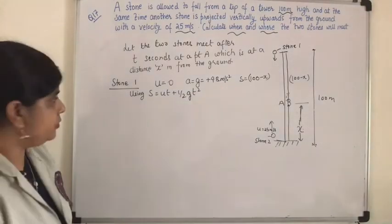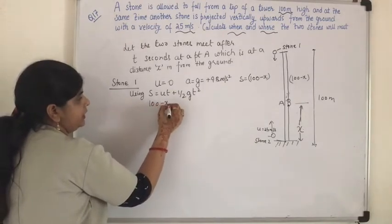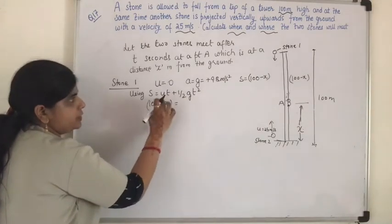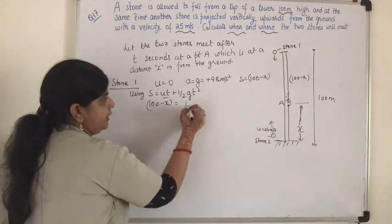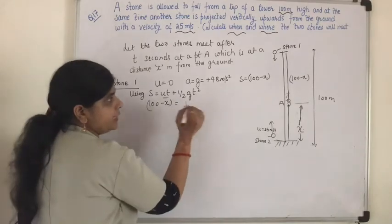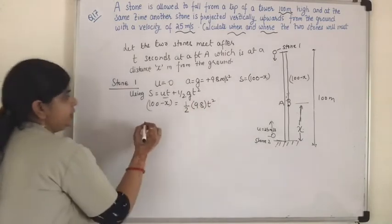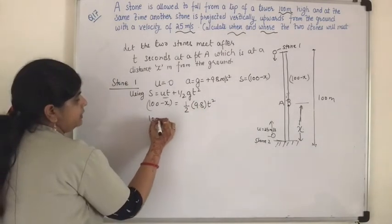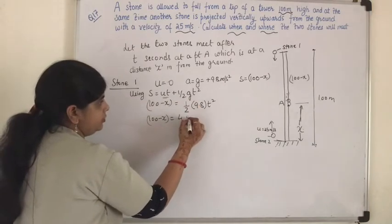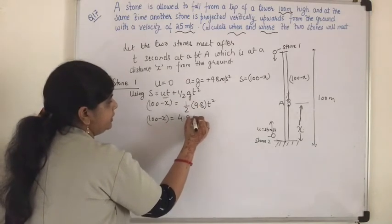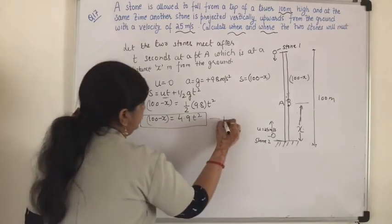Using the equation S = ut + ½at², with S = 100 − x, u = 0 (so that term becomes zero), and a = 9.8, we get: 100 − x = ½ × 9.8 × t², which simplifies to 100 − x = 4.9t². This is equation number 1. We have two variables, x and t, so we need a second equation.